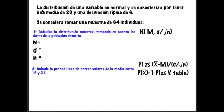Empezamos resolviendo el primer ejercicio que se dejó de tarea, el cual dice: la distribución de una variable es normal y se caracteriza por tener una media de 20 y una desviación típica de 6. Se considera tomar una muestra de 64 individuos.